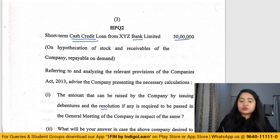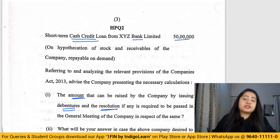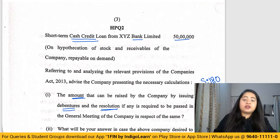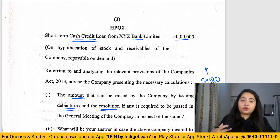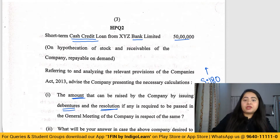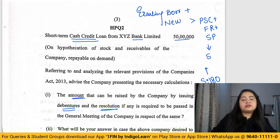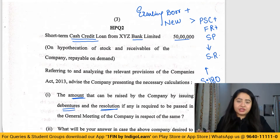The question asks what resolution is required to issue debentures and up to how much amount. This comes from Section 180, which is not directly in the syllabus but partially covered. This section talks about the powers of the board of directors: the board can issue debentures or raise borrowings up to a certain amount using just a board resolution.